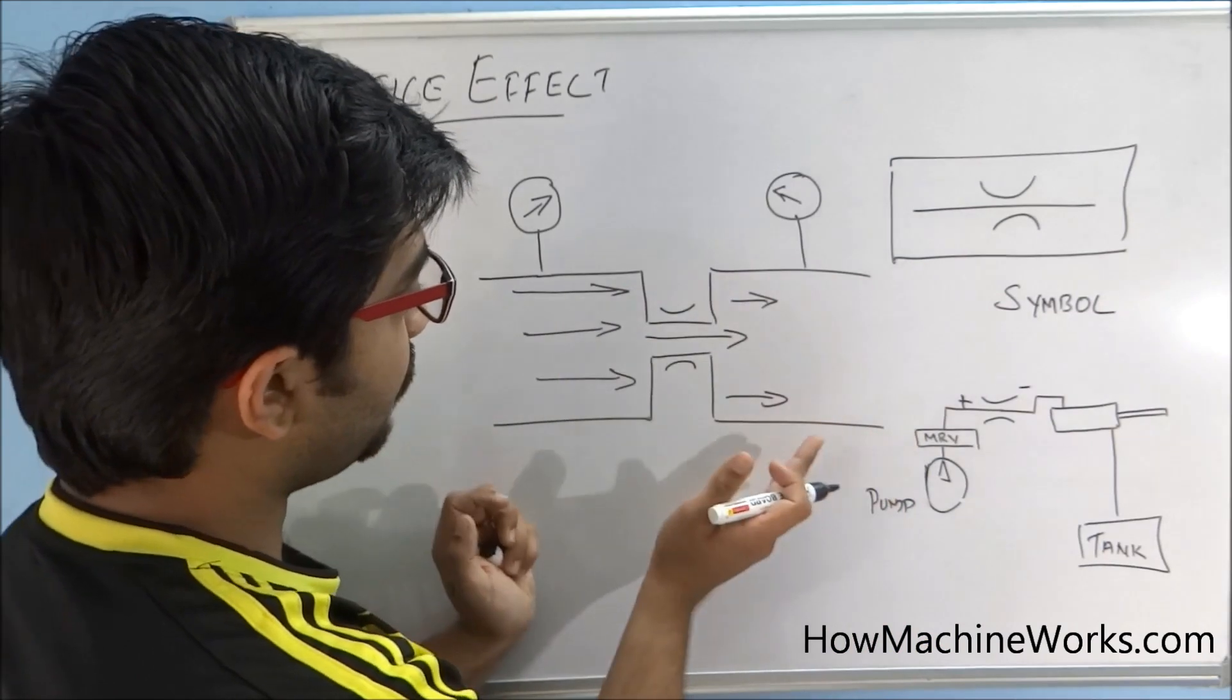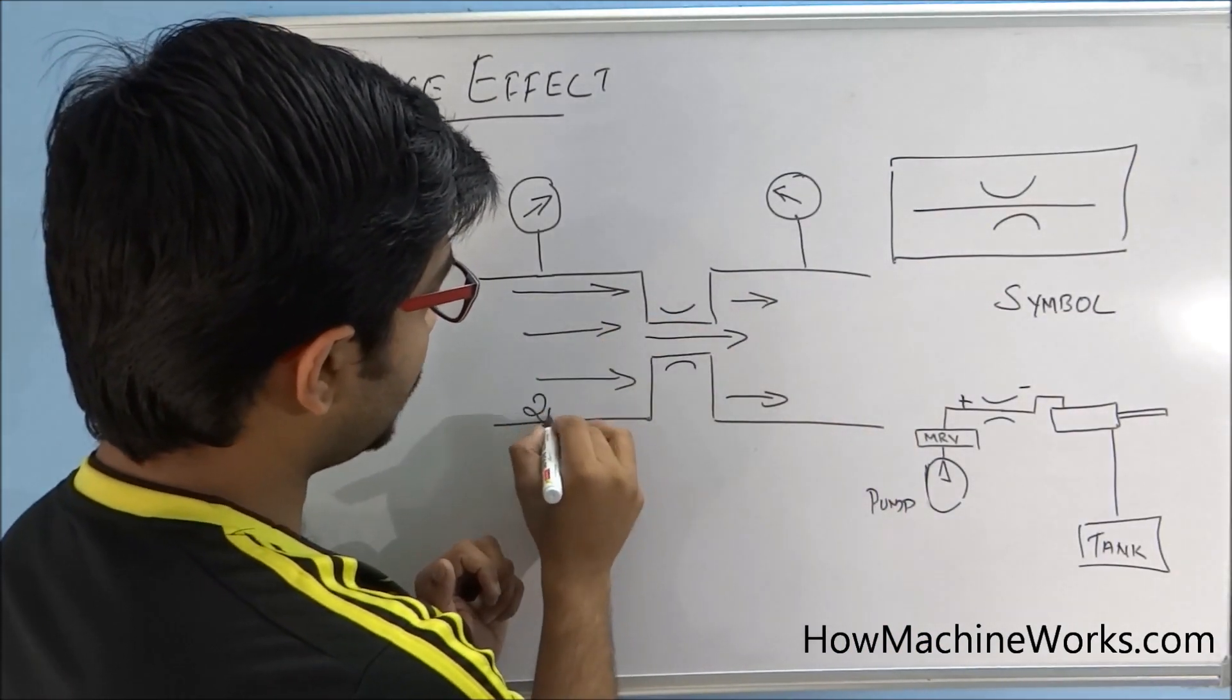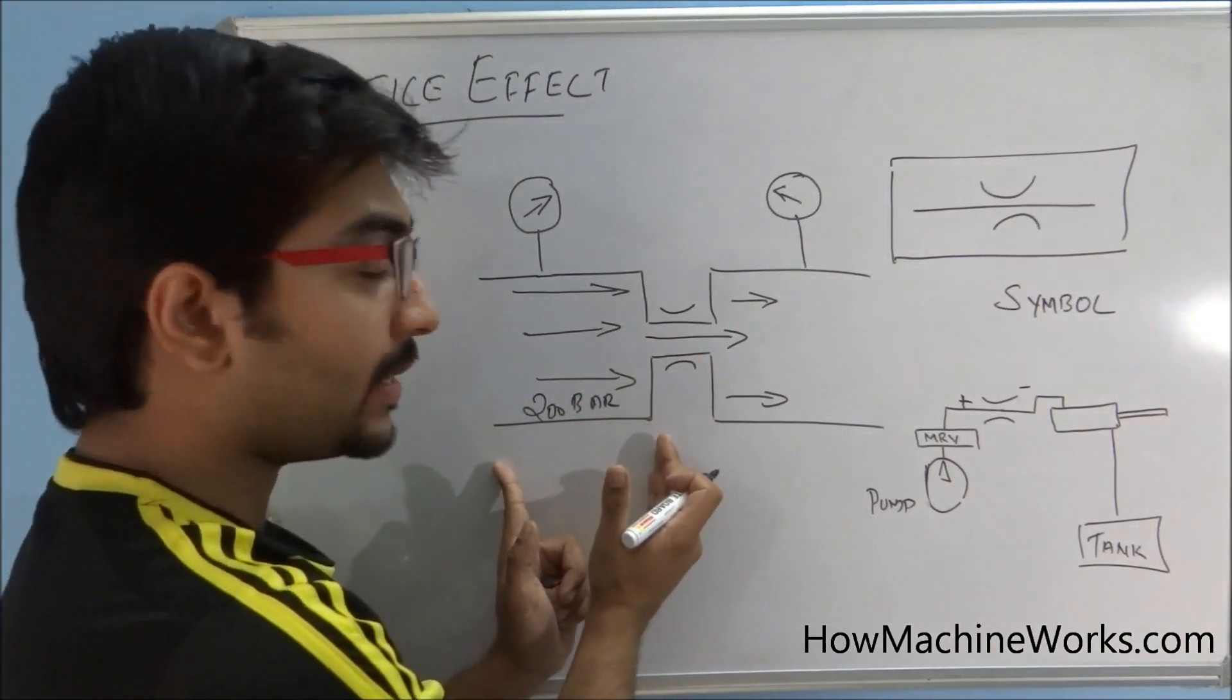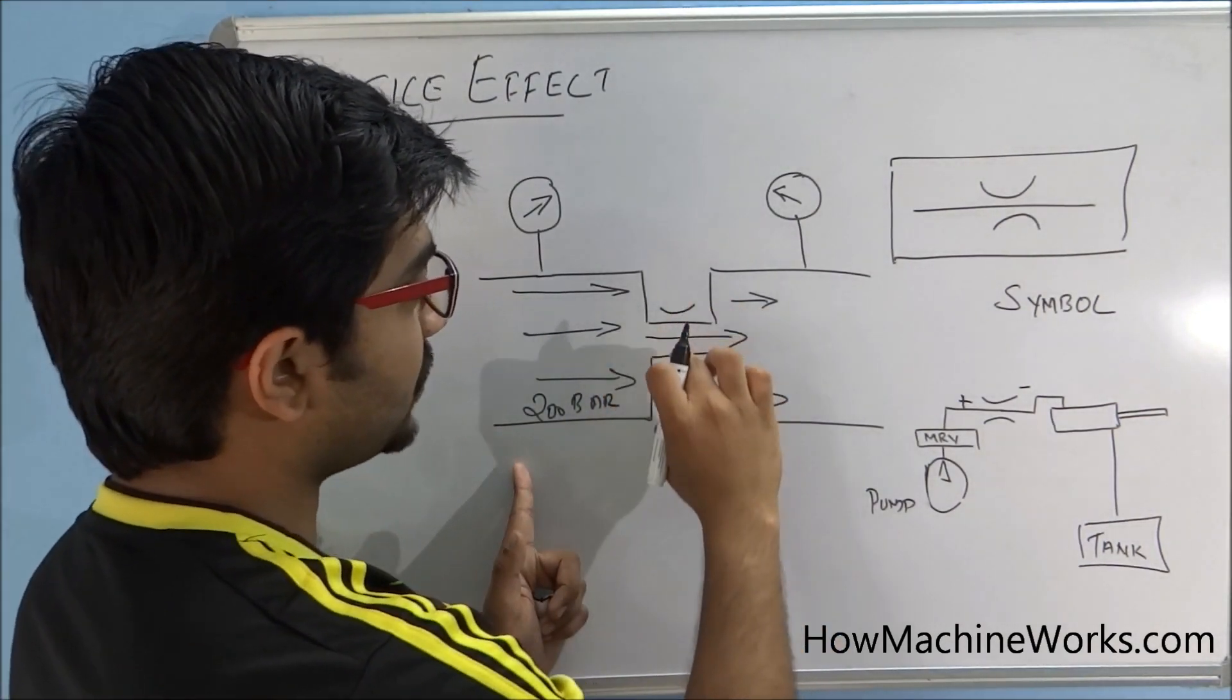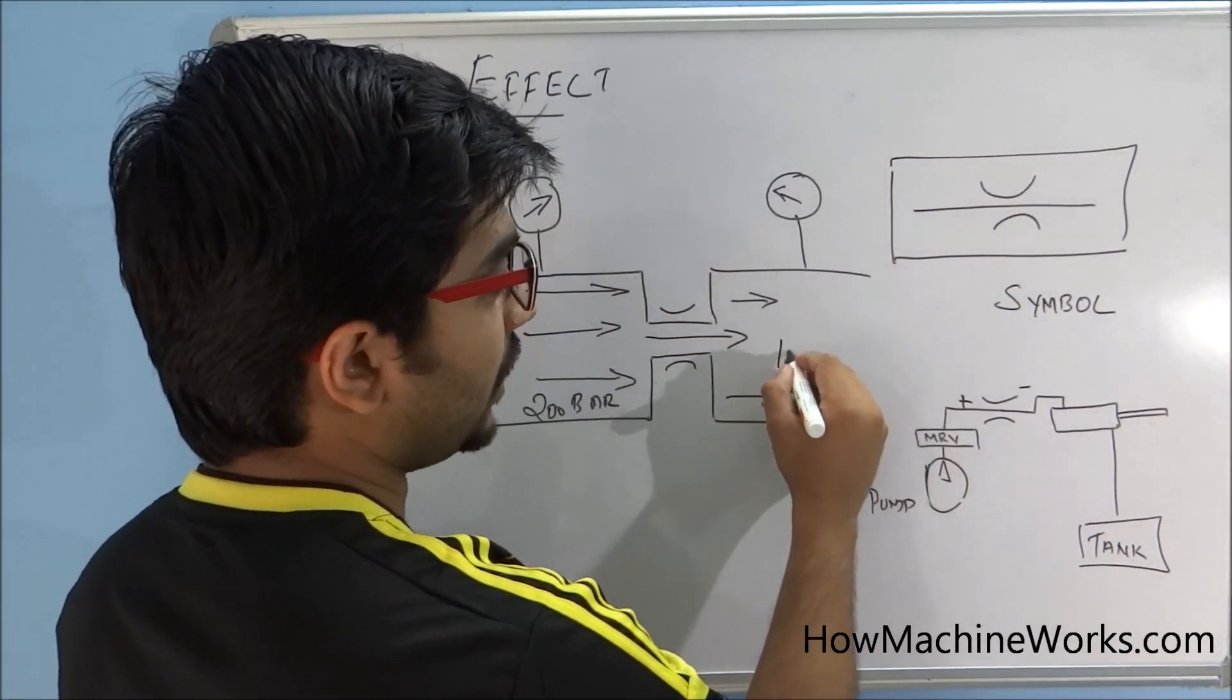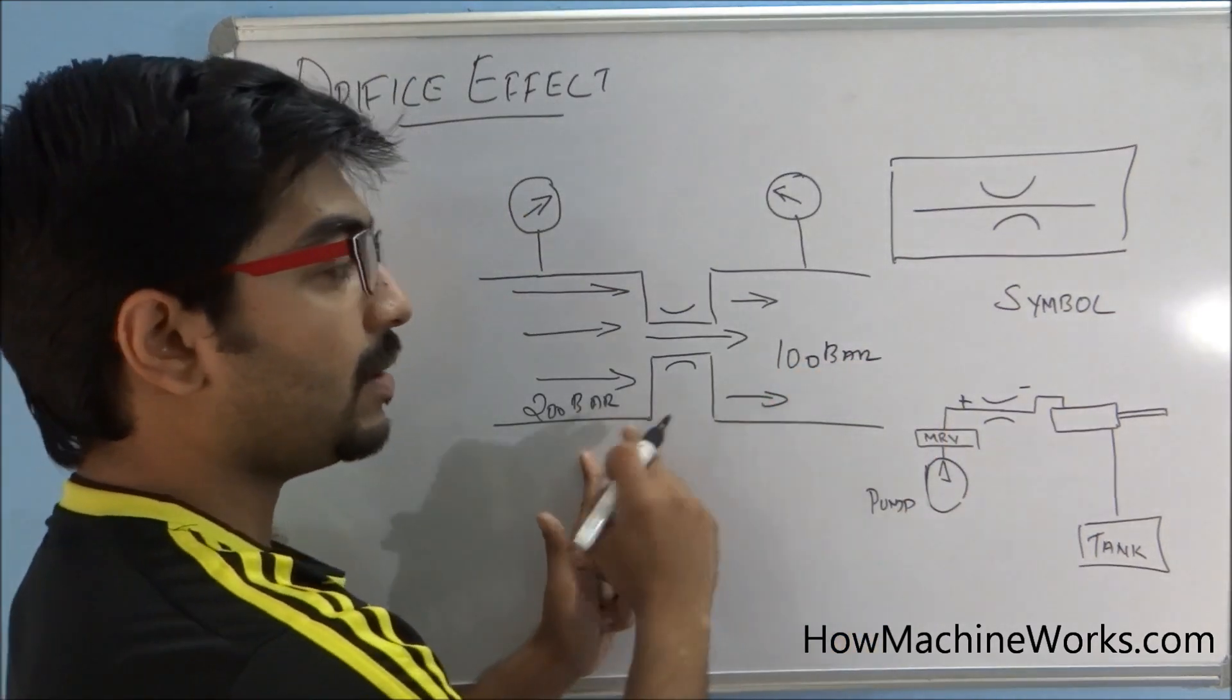This is how it actually works: the flow comes and hits here. If I say we have 200 bar of pressure here, when it hits the orifice we create that much amount of pressure. Then when it bends out through a lesser diameter - because we have a restriction here - we have more pressure. But when it comes outside, the pressure can reduce like 100 bar. So a difference of 100 bar is here in both areas.